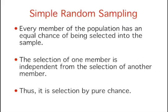In addition, the selection of one member is independent from the selection of another member. In theory then, the strategy of simple random sampling involves selection into a sample by pure chance.